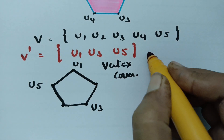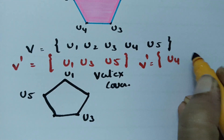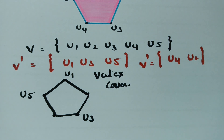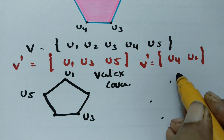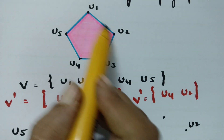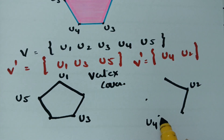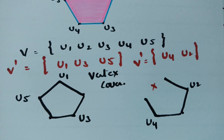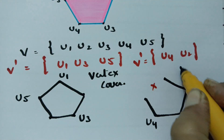Now let's take another set V' = {U2, U4}. U2 has 2 edges and U4 has 2 edges, but one edge is left over and is not covered. Therefore this set is not a vertex cover.